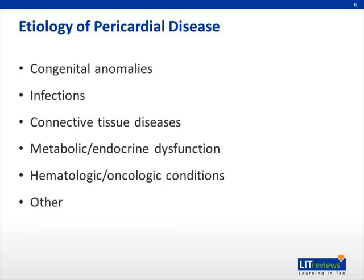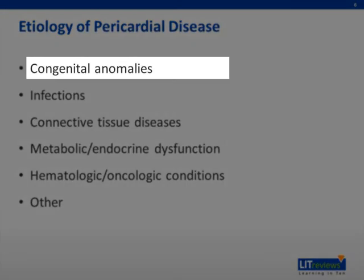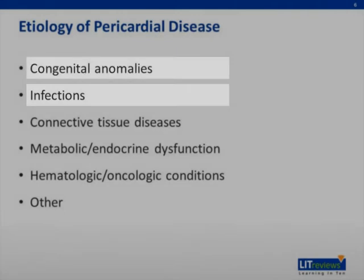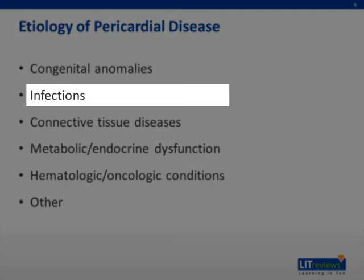Major diseases that involve the pericardium are varied in their pathophysiology. In some, pericardial involvement is one manifestation of a generalized illness; in others, it is a prominent component. Broad categories include congenital anomalies such as partial or complete absence and cysts, and infectious causes including viruses, bacteria, immune complex deposition, tuberculosis, fungi, and parasites.